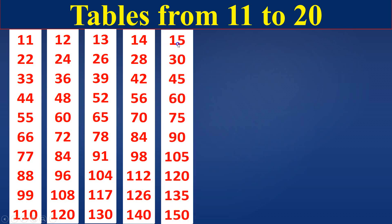15 times table. 15 ones are 15. 15 twos are 30. 15 threes are 45. 15 fours are 60. 15 fives are 75. 15 sixes are 90. 15 sevens are 105. 15 eights are 120. 15 nines are 135. 15 tens are 150.